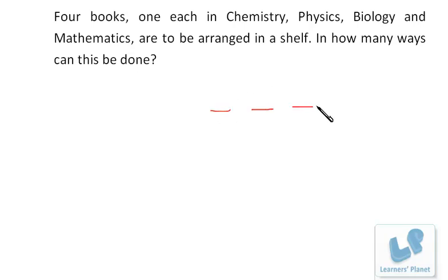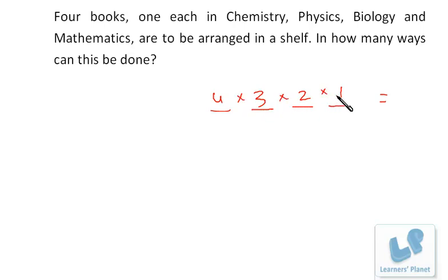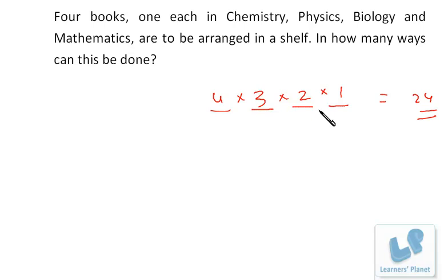Just go straight to it. Chemistry, physics, biology, and mathematics — four books, four places. For the first place you have four choices, for the second book three, then two, then one. So it's 4 × 3 × 2 × 1 = 24 ways. I have applied the principle of counting here, but you could also use permutation or combination.